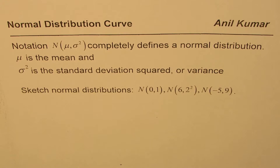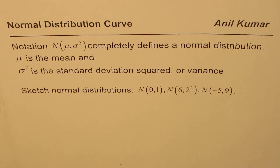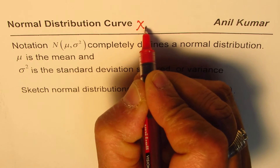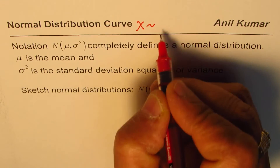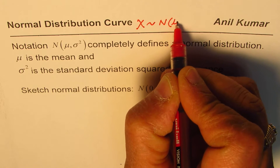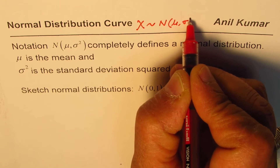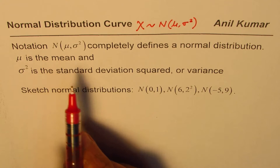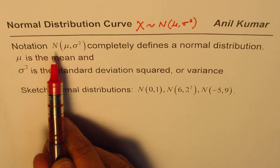I'm Anil Kumar. Before getting into details with working questions on normal distribution, let us first understand the basic curve. When we define a random variable for continuous data, if it follows a normal distribution, we can always write X — the random variable — as distributed normally. That normal distribution is represented with this notation.